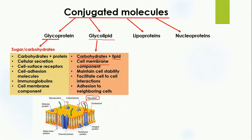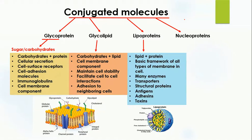Glycolipids are very important to maintain the stability of the cell. They are important for cell-to-cell interactions and also adhesion to neighboring cells to form tissues. So they interact with other cells, and in this way the cells adhere to each other to form tissues. The third important conjugated molecule is lipoprotein.